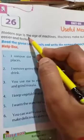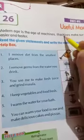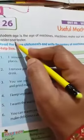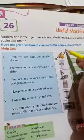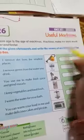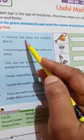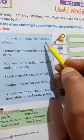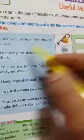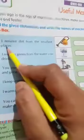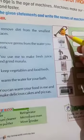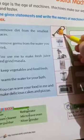Modern age is the age of machines. Machines make our work much easier and faster. Read the given statements and write the name of machines. Use the help box. Number 1: I remove dirt from the smallest places. Look at this picture. Once again repeat statement. I remove dirt from the smallest places. Which is this? This is vacuum cleaner.